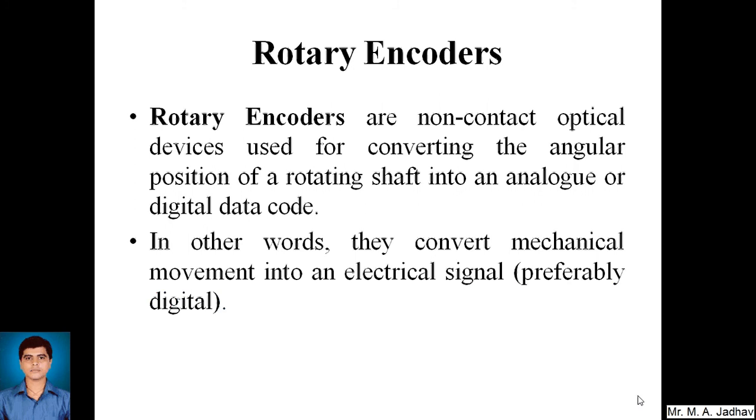Rotary encoders are non-contact optical devices used for converting the angular position of a rotating shaft into an analog or digital data code. In other words, they convert mechanical movement into an electrical signal, preferably a digital signal.